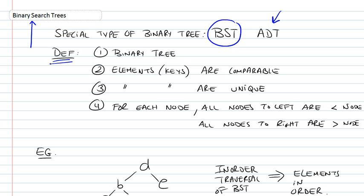First, let's define a BST. A BST is a binary tree, so it's a tree and it's binary. The maximum number of children of a node is 2. There are extra definition elements that we've added to the binary search tree.